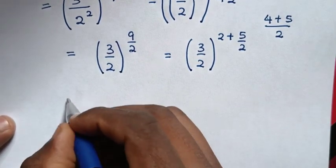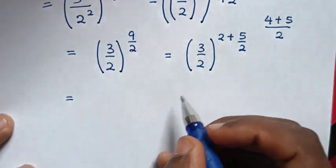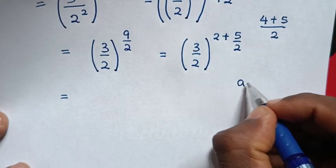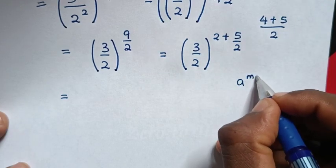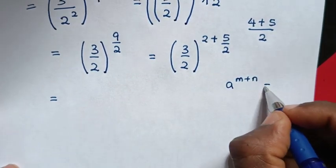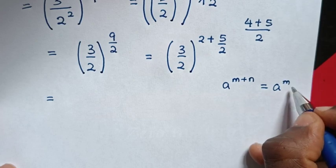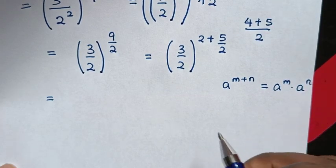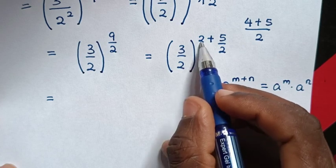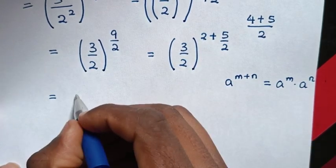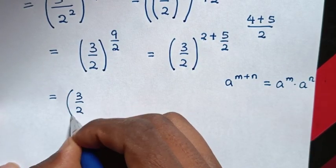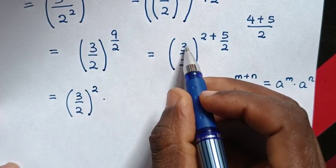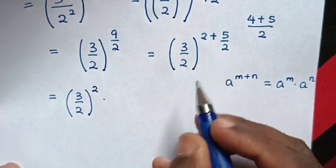Then it will be equal to. From this exponent, the rule is: a power of (m plus n) is equal to a power of m times a power of n. So it will be 3 over 2, in bracket, power of 2, times 3 over 2, power of 5 over 2.